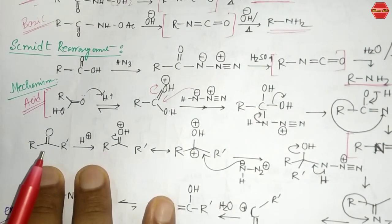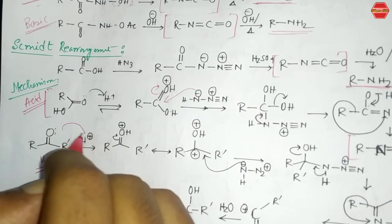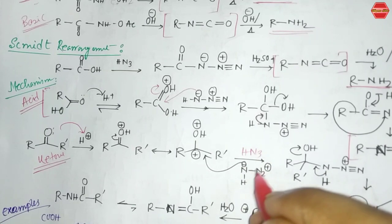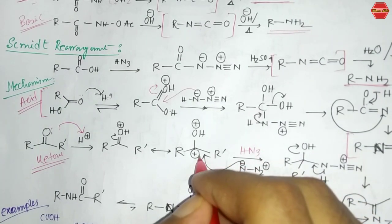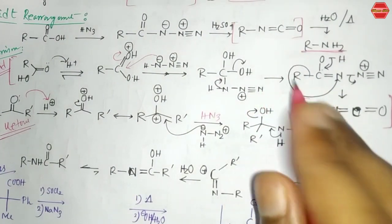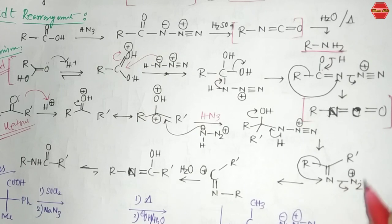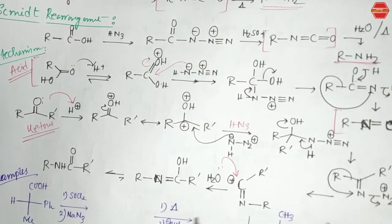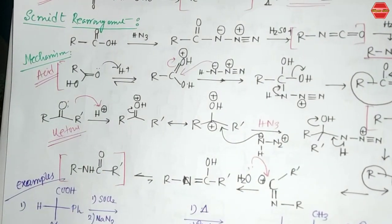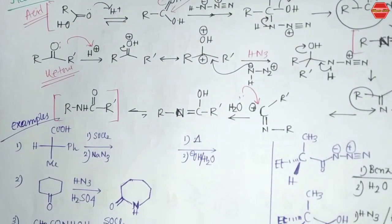For a ketone substrate in the Schmidt reaction, oxygen takes a proton to give OH⁺, then HN₃ attacks the carbonyl carbon. After rearrangement, OH leaves, R migrates to nitrogen, N₂ leaves as the leaving group, and oxygen attacks the center. After tautomerization, you get the amide product as the overall result.